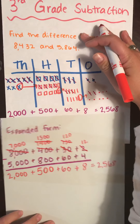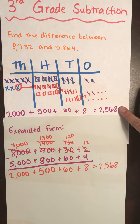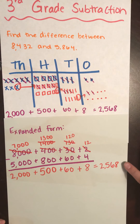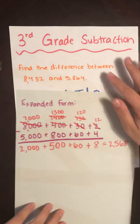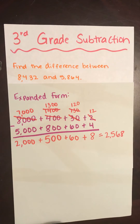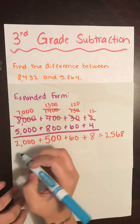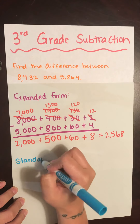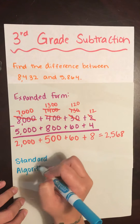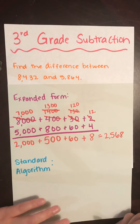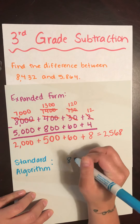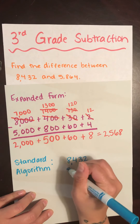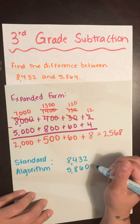We did two different methods, but we got the same answer: 2,568 and 2,568. So this is just two different methods to solving the same problem. Now we're actually going to solve it one more time — same math problem — but this time I'm going to use the standard algorithm. This is probably what we're used to seeing. So in this method, we just write 8,432 minus 5,864 and leave the numbers as they usually are.